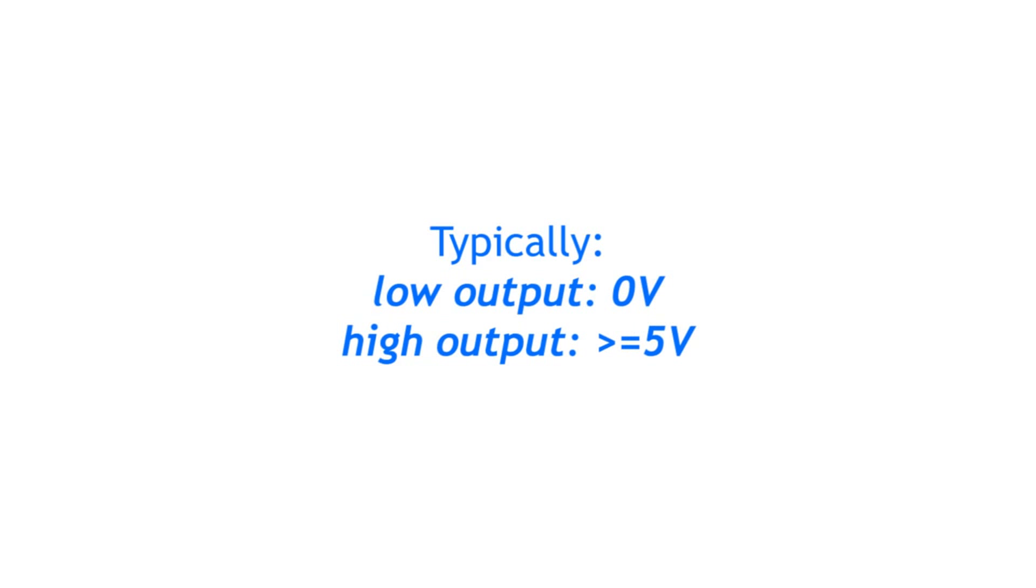On the output side, a low signal is generally zero volts and a high signal is mostly either five volts or ten volts.